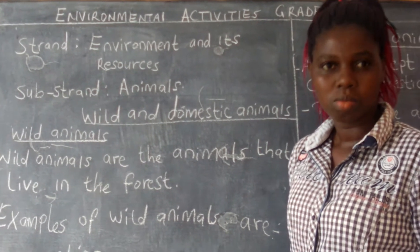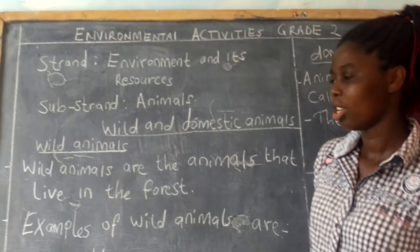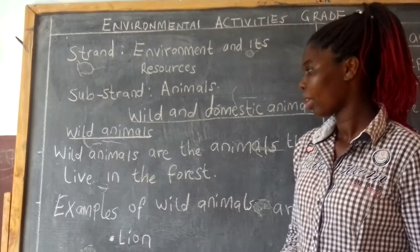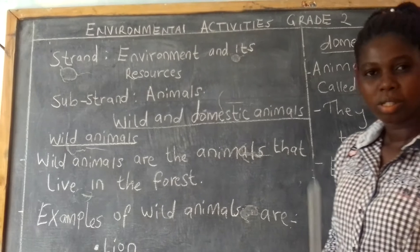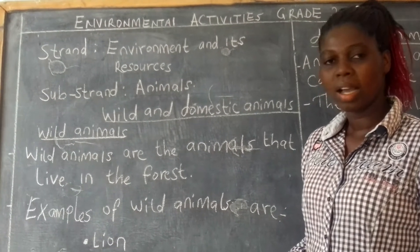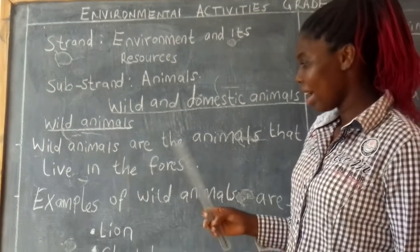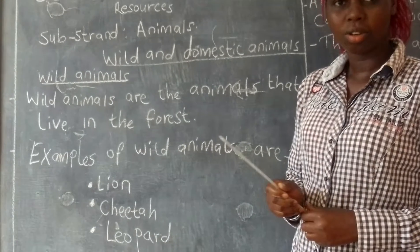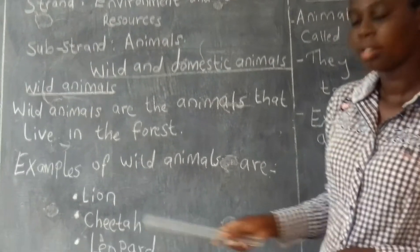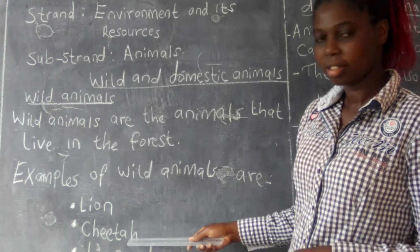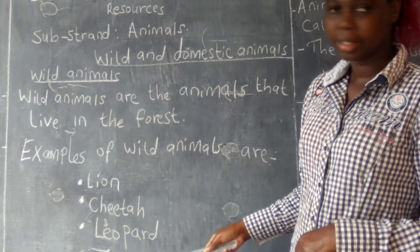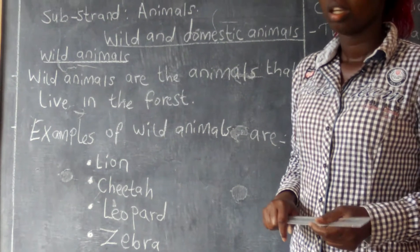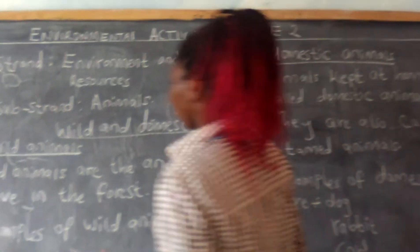We have to start with wild animals. Wild animals are the animals that live in the forest. Examples of wild animals are lion, cheetah, leopard, and zebra. These are just the examples. We have very, very many wild animals.